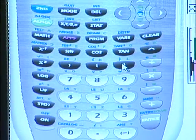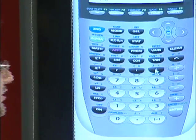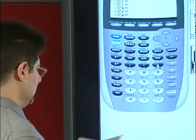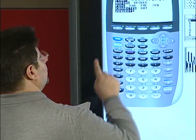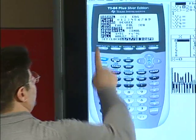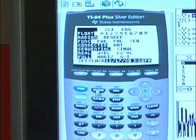First, we enter the function as sin(2x) minus sin(x). Then we make sure that we are in the correct mode. We are in the radian mode, so we don't need to make any changes.